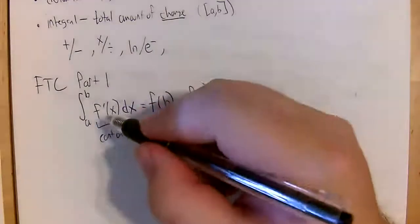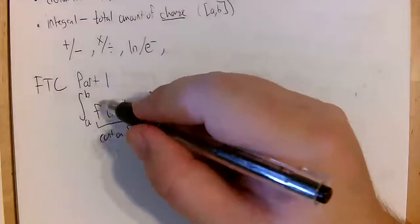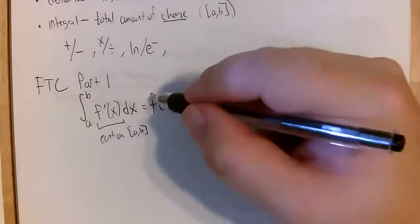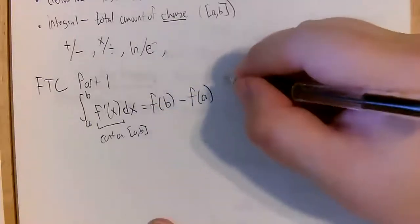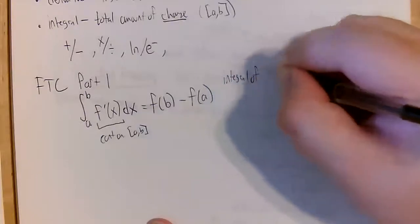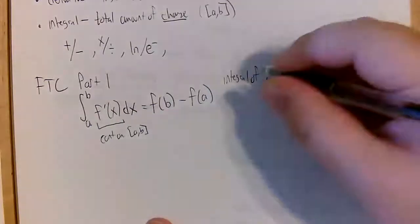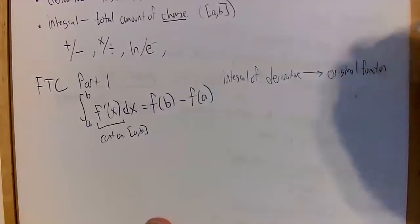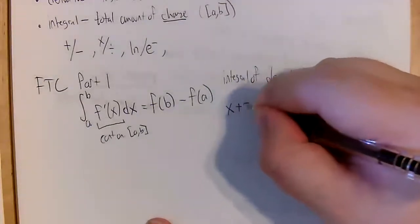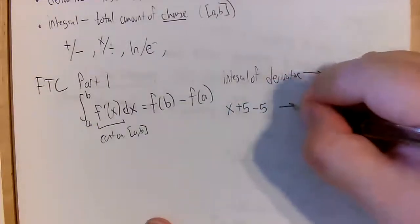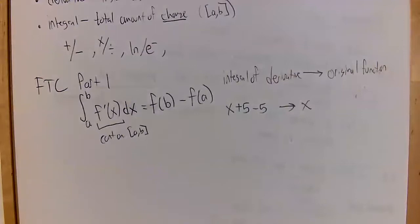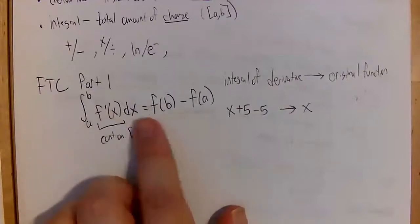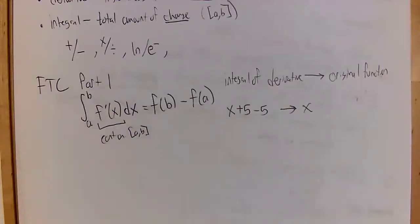Let's examine what's happening here. Inside our integral we have a derivative, so we're putting a derivative into the integral, and what we get out is the original function itself. The integral of a derivative gives us back the original function. An analogy: if we start with x, add five, and then subtract five, we end up back at x. Similarly, we have a function, take its derivative, then integrate from a to b — we don't quite get f of x, but we do get f of b minus f of a.